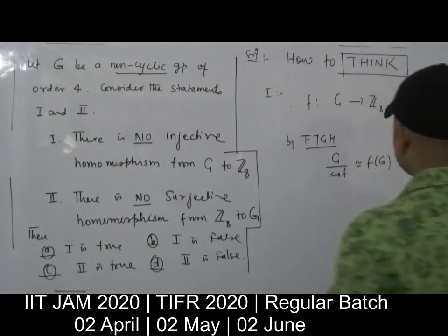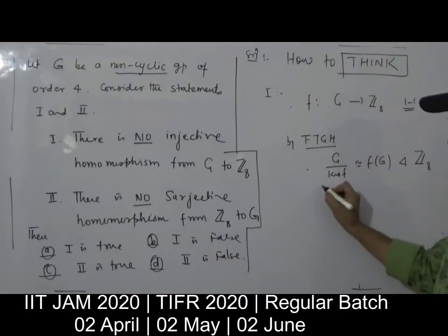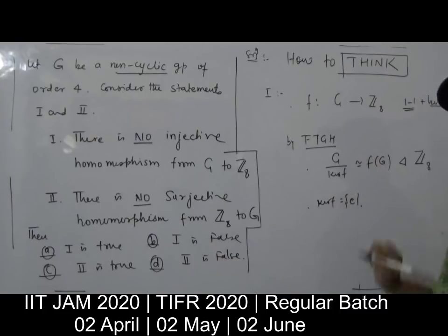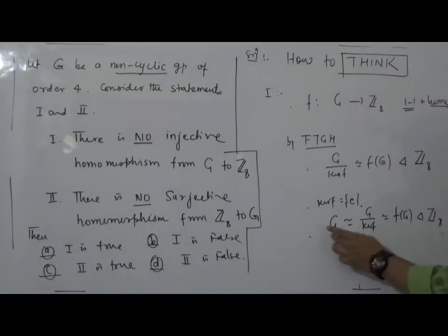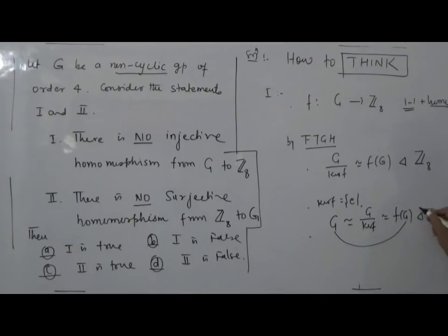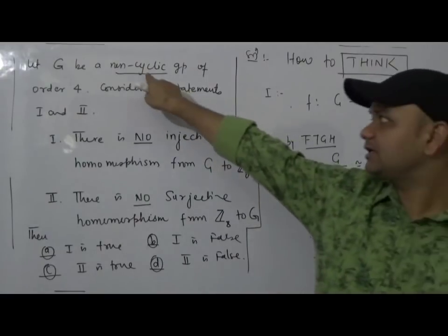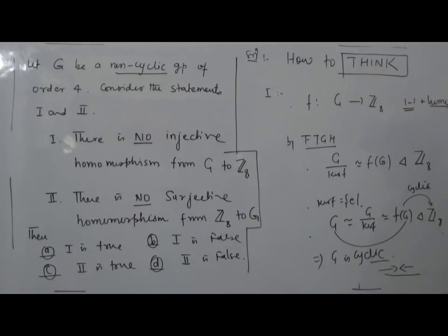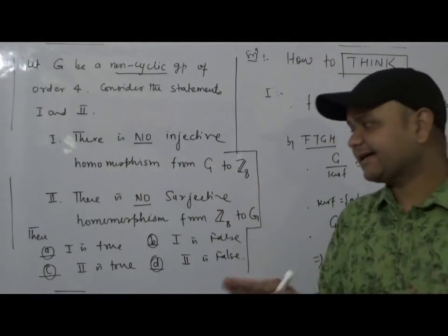Because Z8 is a cyclic group, the image F(G) is a subgroup of it and so is also cyclic. Now, since F is one-to-one (injective), the kernel of F is trivial. Combining these two facts: G is isomorphic to G modulo kernel of F, which is isomorphic to F(G), which is cyclic. Since isomorphism is an equivalence relation, G is isomorphic to a cyclic group — that implies G is cyclic. But we were given G is non-cyclic. Contradiction. So our assumption of a one-to-one homomorphism is wrong — there is no injective homomorphism from G to Z8. Statement 1 is true.